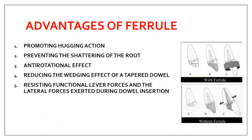The advantages of ferrule are: first, it promotes the hugging action and prevents scattering of the root - without a ferrule there are chances of tooth fracture, but with a ferrule the hugging action prevents scattering; second, it has an anti-rotational effect; third, it reduces the wedging effect on the post; and fourth, it resists functional lever forces and lateral forces exerted during dowel insertion, thereby preventing fracture or scattering of the root.